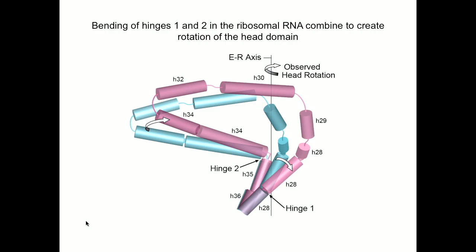In the rotated state shown in magenta, helix 28 straightens out. Hinge two is at a three-way helical junction. Going from the non-rotated to the rotated state, it moves upward. These two hinging movements combine to create an overall rotational movement.